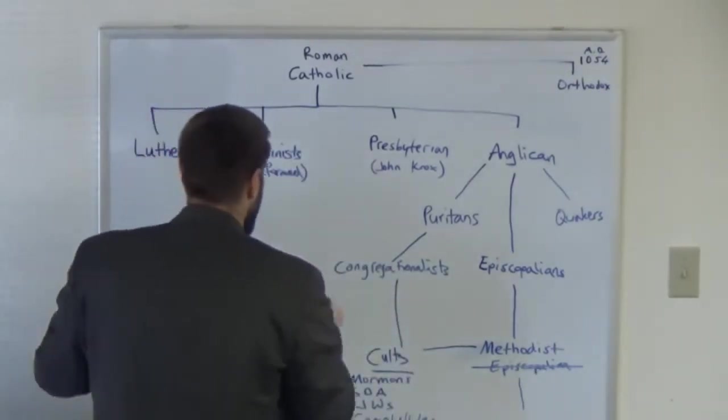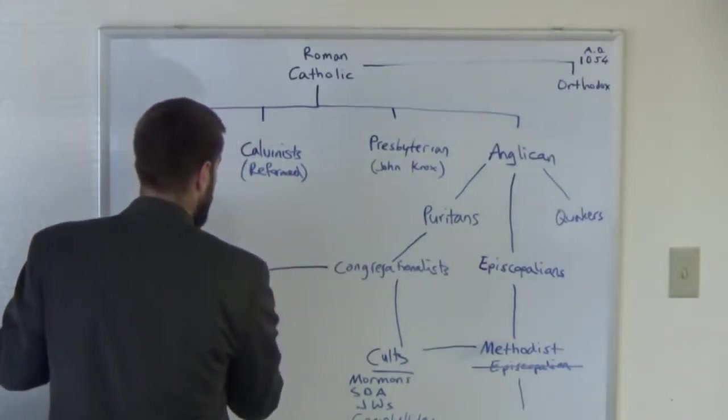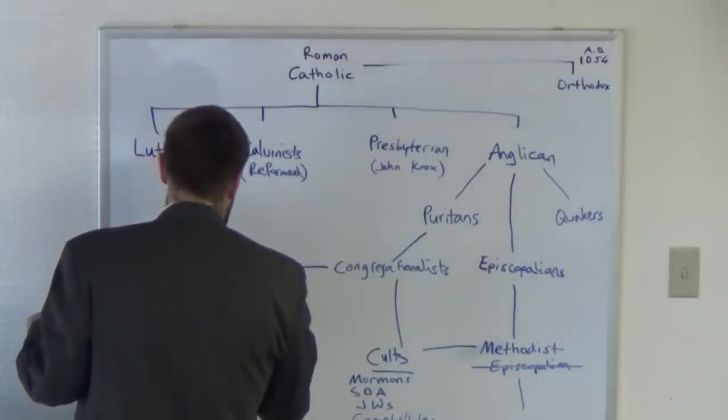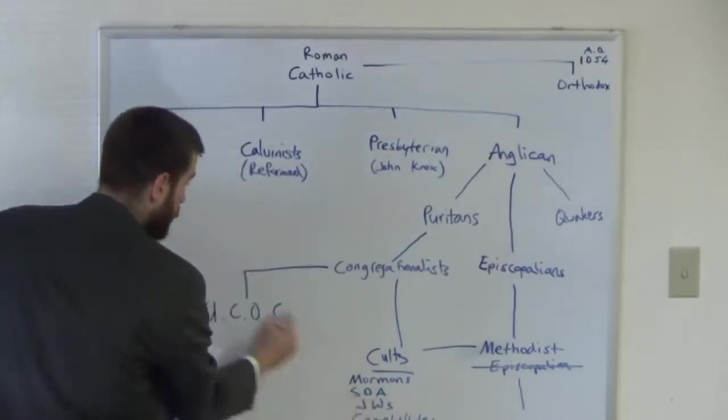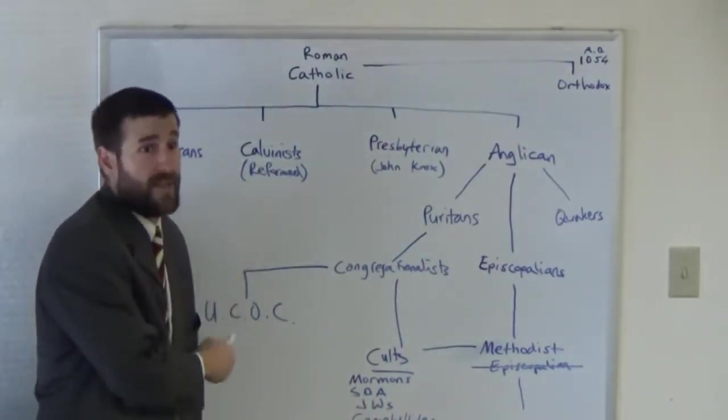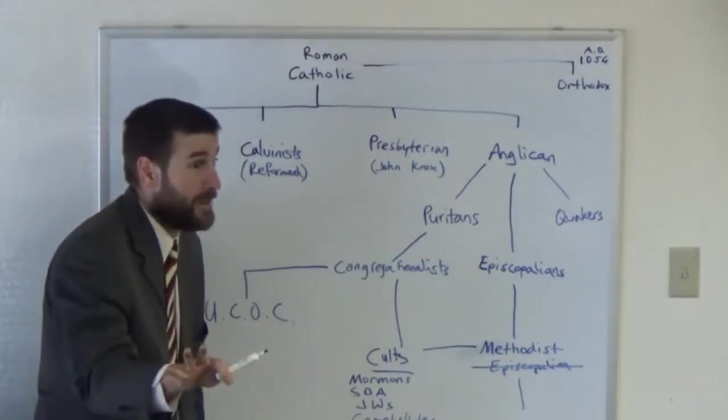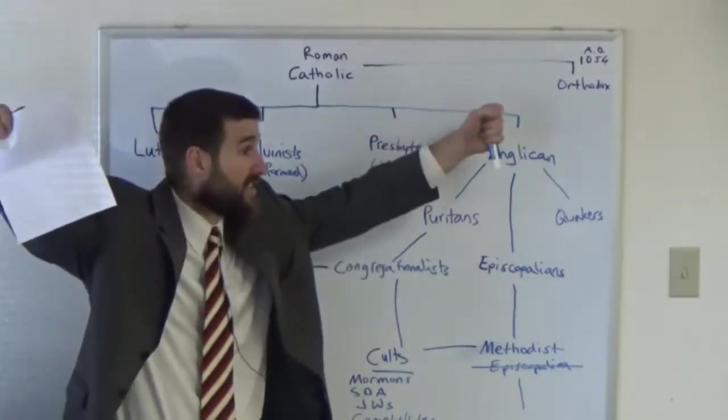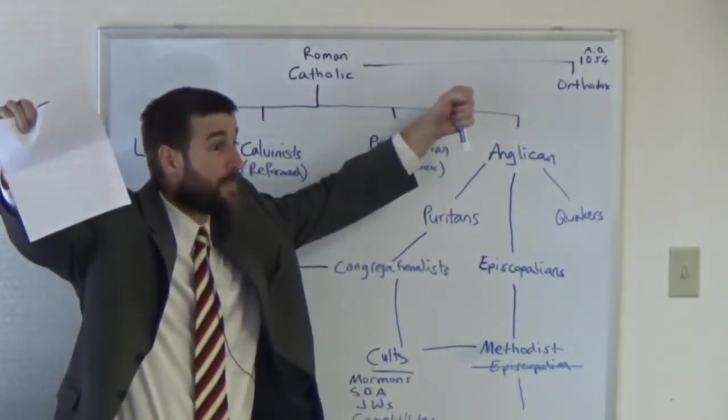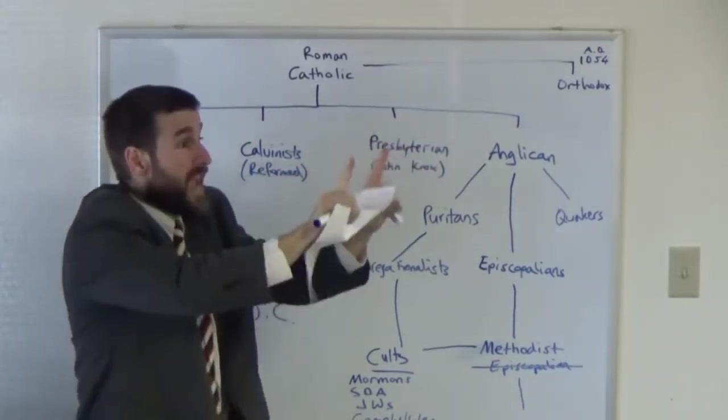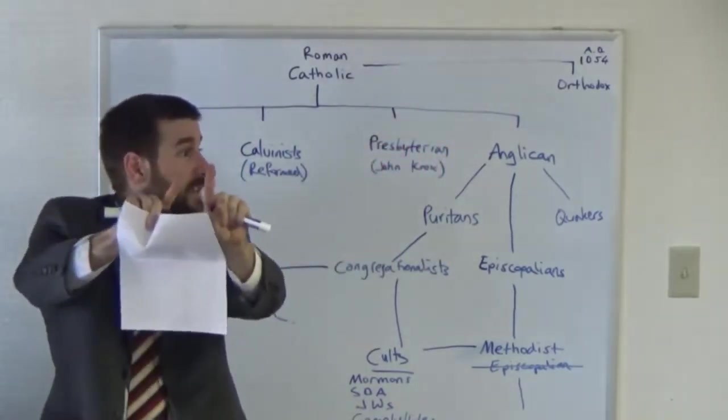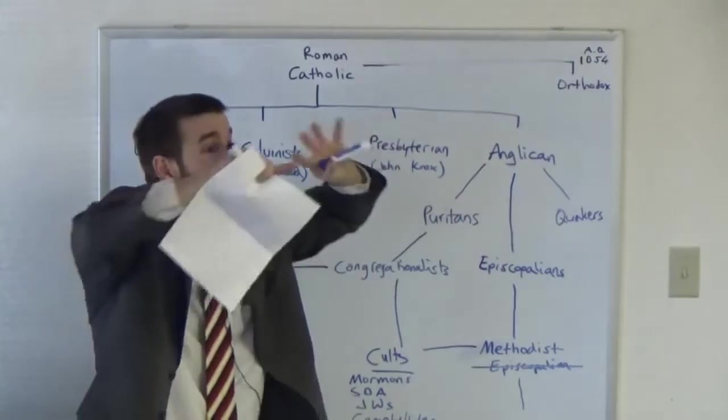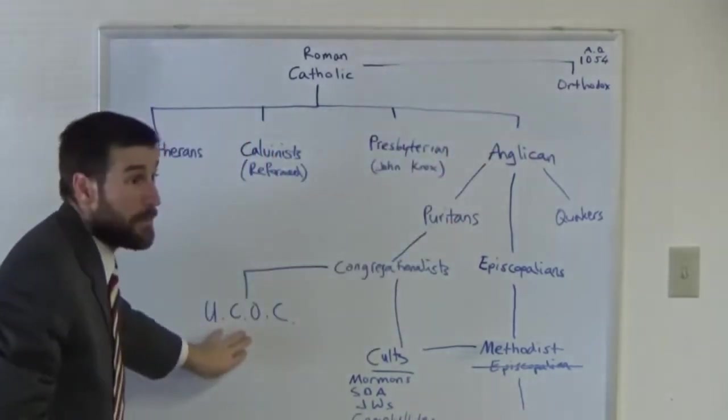Then you've got over here the Congregationalists merged, or I'm sorry, evolved into what today we know as the United Church of Christ. So don't confuse the Church of Christ with the United Church of Christ. Now United Church of Christ is Obama's denomination. Enough said, right? But the United Church of Christ here in Phoenix has a big picture on the outside. They had a banner up that literally has a picture of a man and a woman, two men and two women saying it's all fine. And it says literally, we're on the side of love. And it has a rainbow flag. So that should tell you something about these people right here.